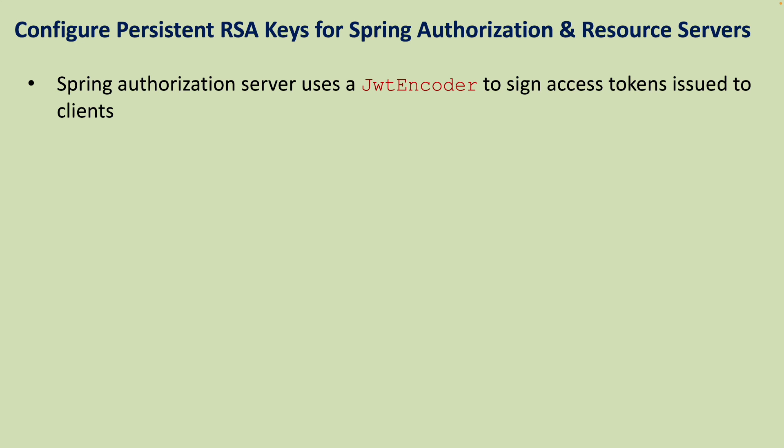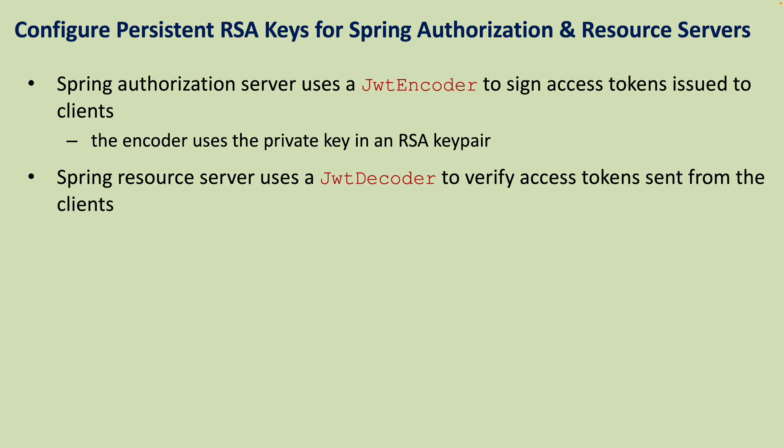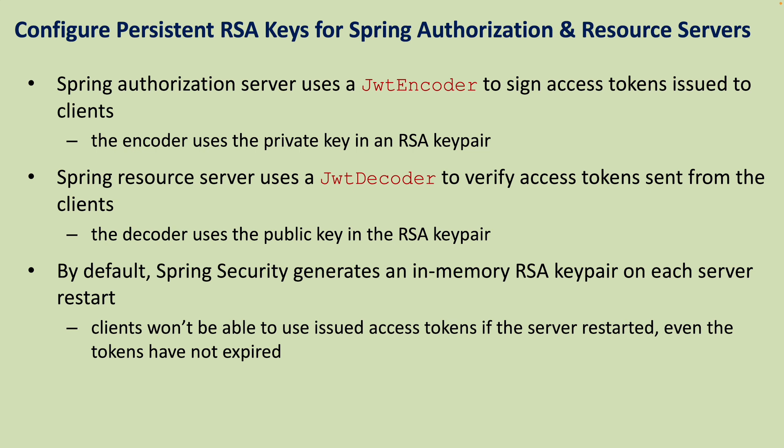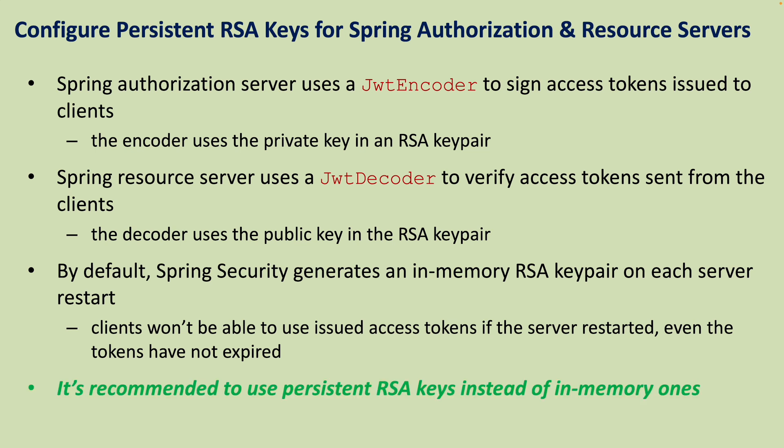Spring Authorization Server uses a JWT encoder to sign access tokens issued to the clients. The encoder uses the private key in an RSA key pair, and Spring Resource Server uses a JWT decoder to verify access tokens sent from the clients. The decoder uses the public key in the RSA key pair. By default, Spring Security generates an in-memory RSA key pair on each server restart, which means clients won't be able to use issued access tokens if the server is restarted, even if the tokens have not expired. So it's recommended to use persistent RSA keys instead of in-memory ones.